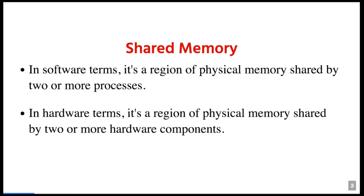If you ask a hardware engineer what shared memory is, you're going to get a little different response. There's a region of physical memory shared between two or more hardware components. In our case, we're going to be discussing the GPU and CPU sharing memory through system memory, aka RAM. Generally, this is used to transfer information back and forth between devices, such as textures for video graphics.